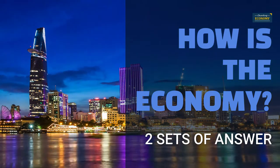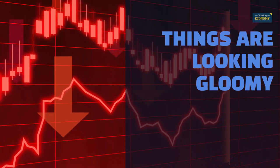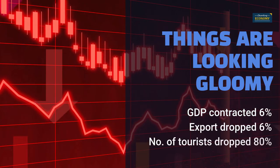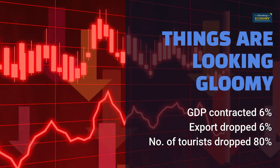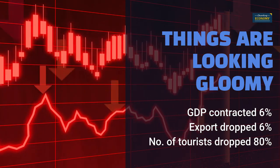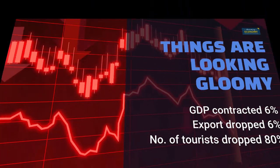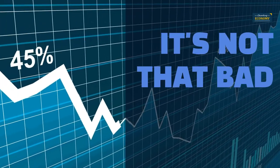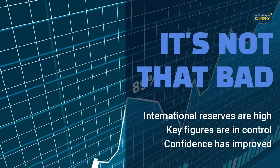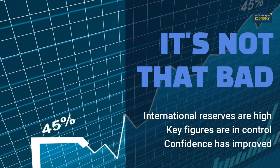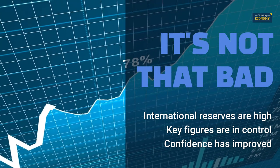Let me give you two sets of answers. The economy is poorly affected by the COVID crisis. It contracted more than 6% last year. Exports dropped by 6%, and the number of tourists dropped more than 80%. Things are looking gloomy. On the other hand, the economy contracted less than others amid the COVID crisis. International reserves are still high. Public debt, unemployment, and inflation are in control. Consumer confidence has improved from the lowest point. Things are not that bad.